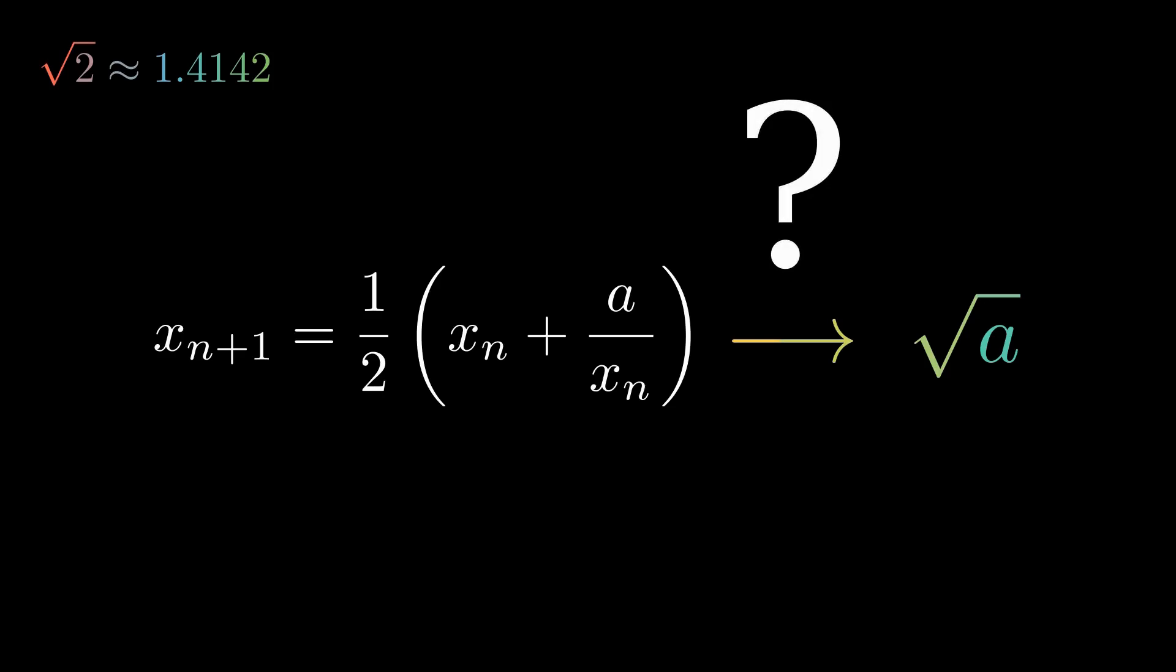For example, to calculate the square root of 7, iterate this formula with a equals 7, stopping when you are satisfied with the accuracy. For the square root of 230, just consider the sequence. And so on.